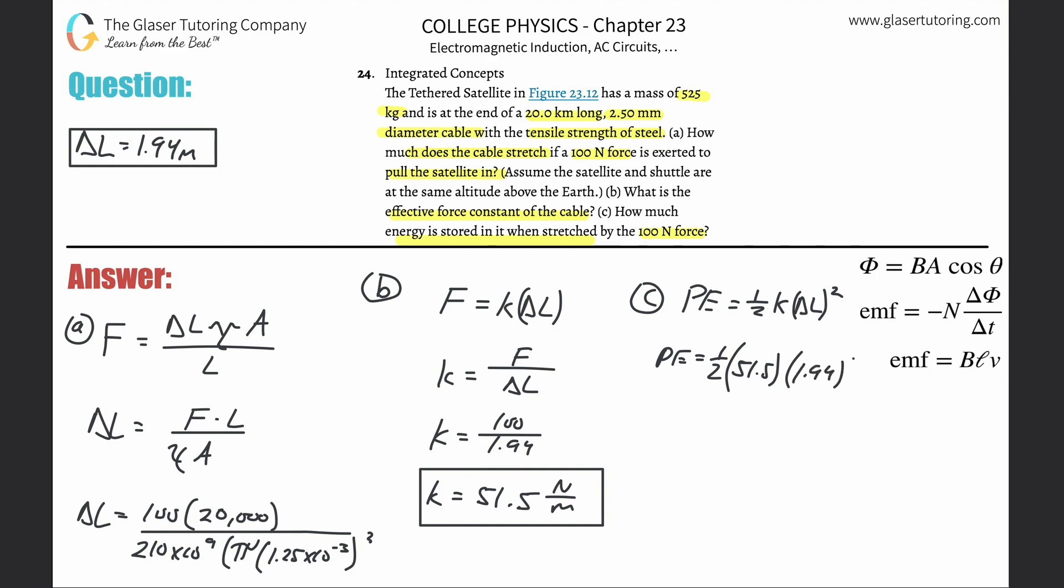The change in length was 1.94, you got to square it, and now this will be the potential energy stored in that particular system. So it's 0.5 multiplied by 51.5, I'm using the exact answer, multiplied then by that change in length squared. I'm using all exact answers here.